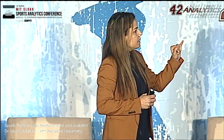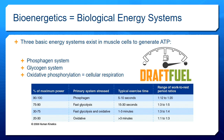Something else I wanted you to look at is the range of work-to-rest period ratios in the right column. You can train your body to utilize one of these systems more than others. Someone who has type one fibers — slow, muscular — has a lot of muscular endurance capacity and cardiorespiratory endurance capacity and would be on the oxidative end. If you want to train them to have more type two fiber characteristics, you would have them do a 1-to-12 or 1-to-20 ratio rather than the 1-to-3 ratio.